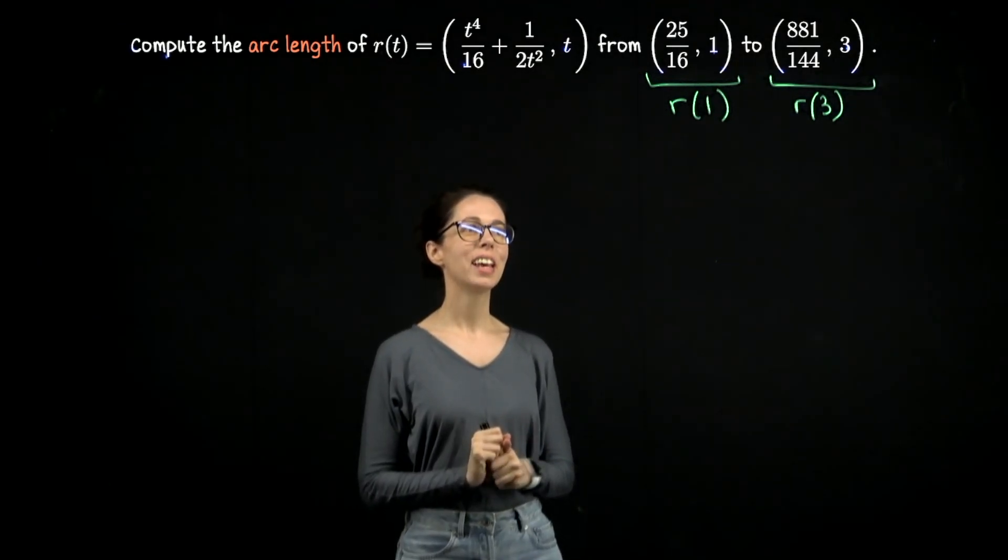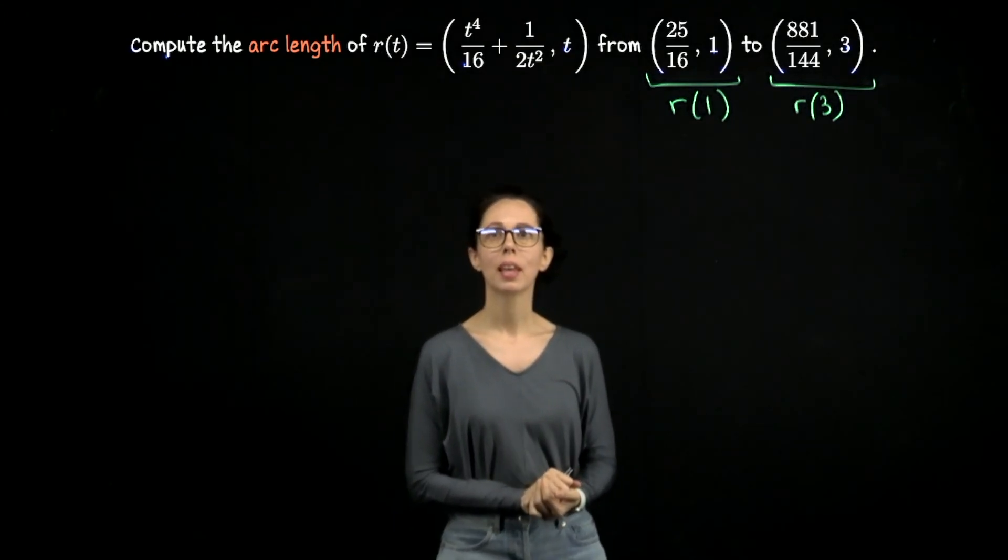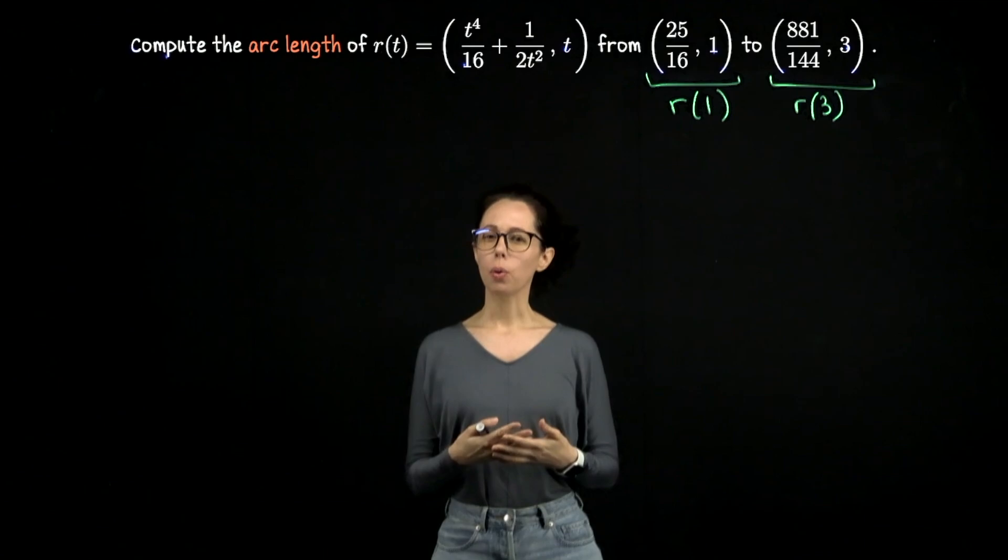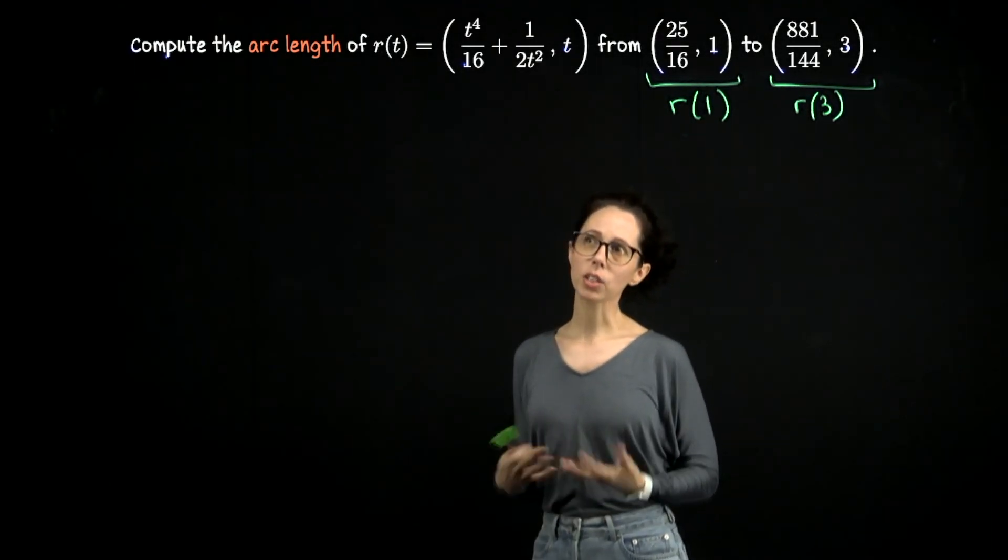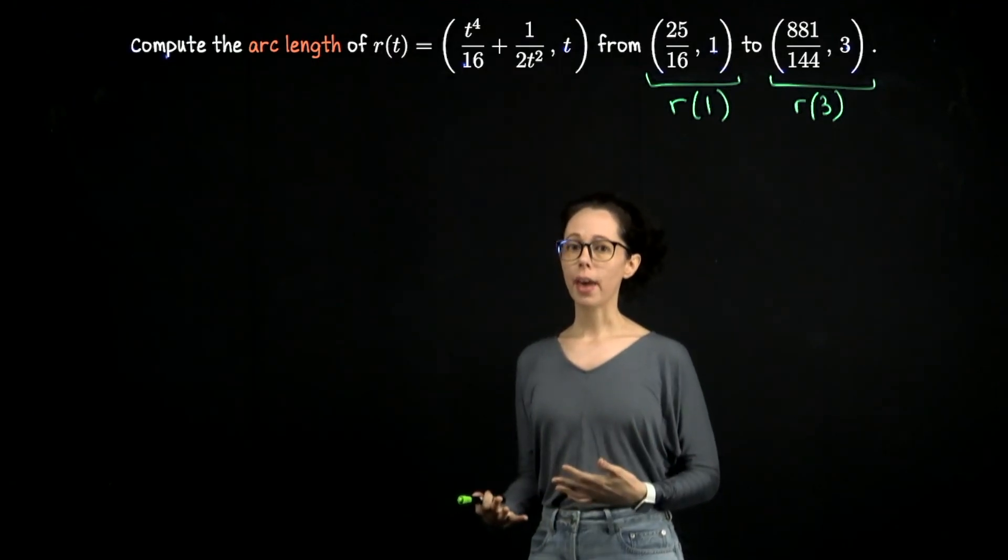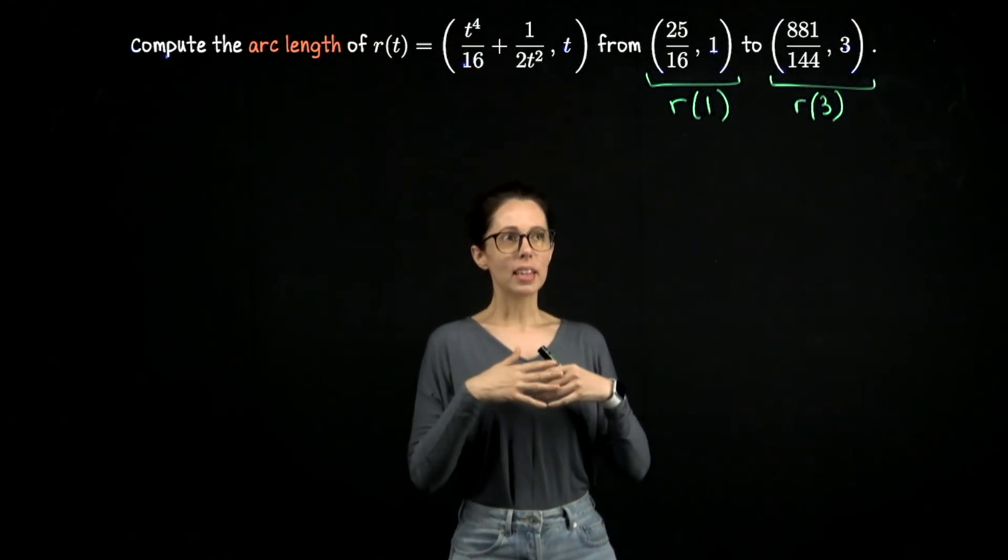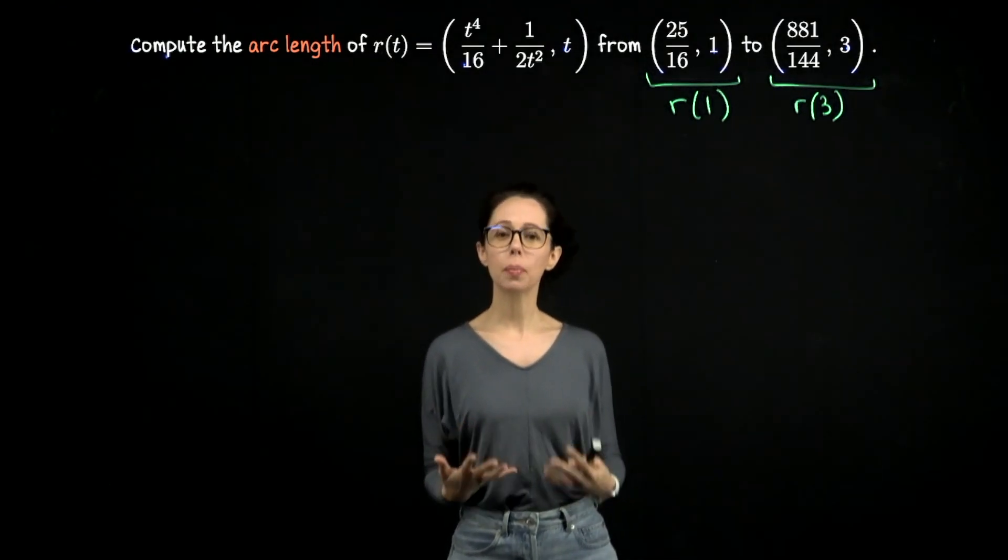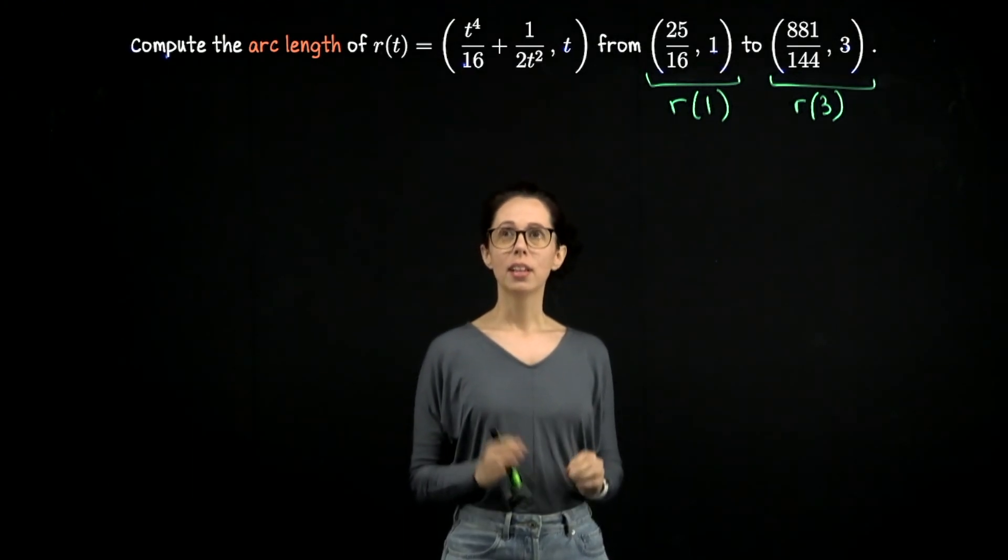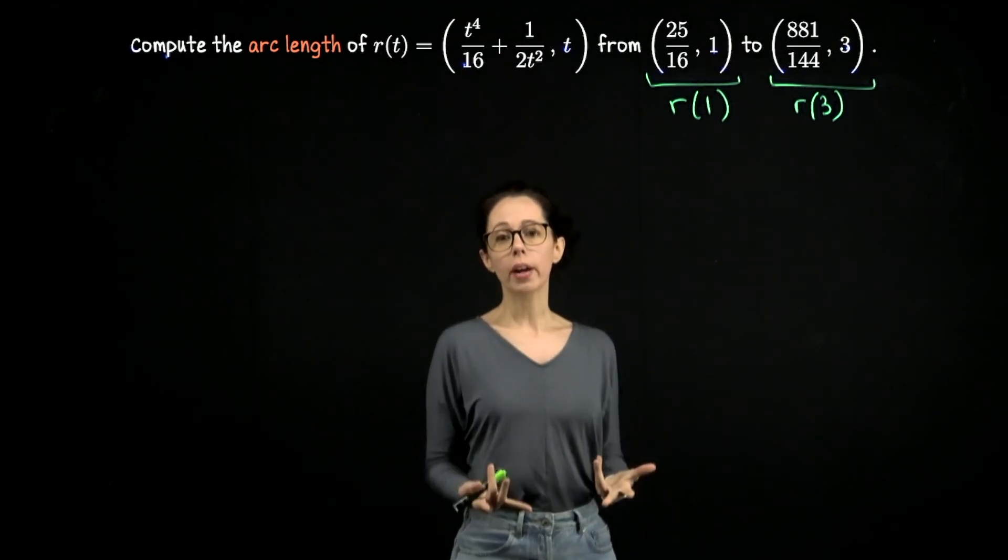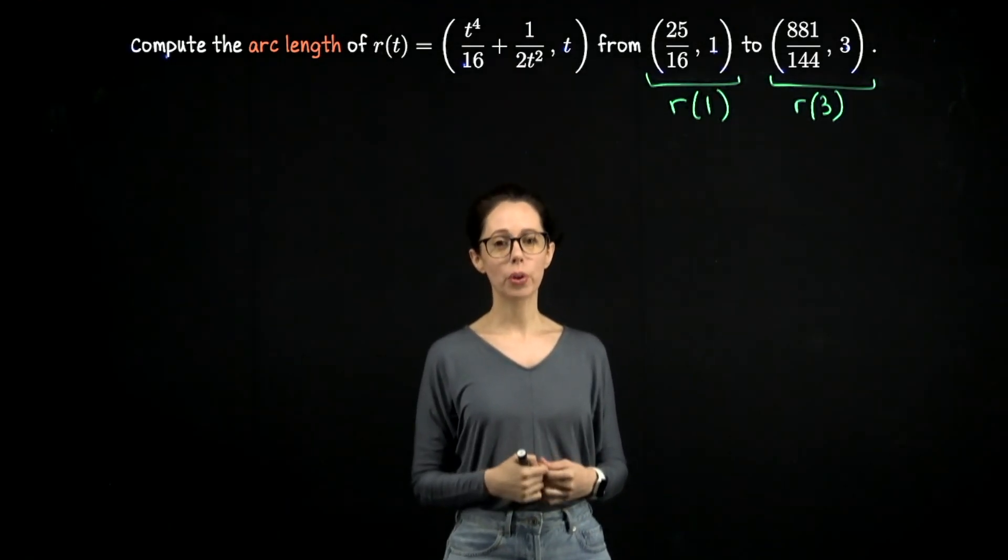So when we integrate, the lower bound of our integral will be 1 and the upper bound will be 3. We need to set up the integrand here. So the thing we have to do is differentiate the x coordinate with respect to t, square that, and add to that the square of the derivative of the y coordinate with respect to t. The computation here can be a little bit tricky. So what I would like for you to do is go ahead and try that. Differentiate each of these coordinates with respect to t, square their derivatives, add them together.